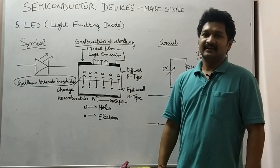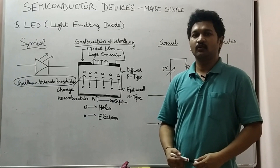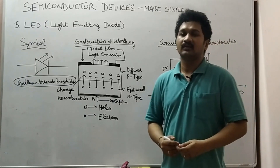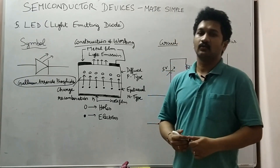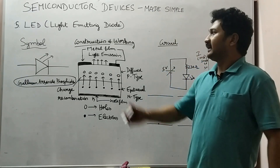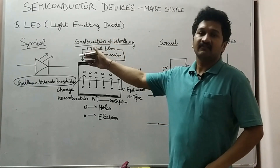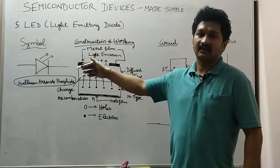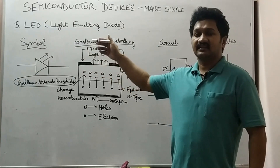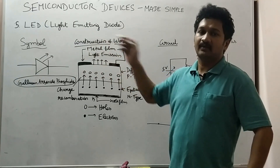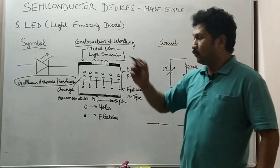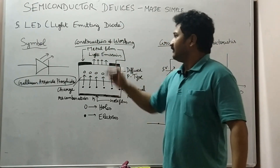Welcome to my channel. In this lecture we are going to discuss about the light emitting diode. A light emitting diode is the same as a PN junction diode which conducts in forward bias mode.